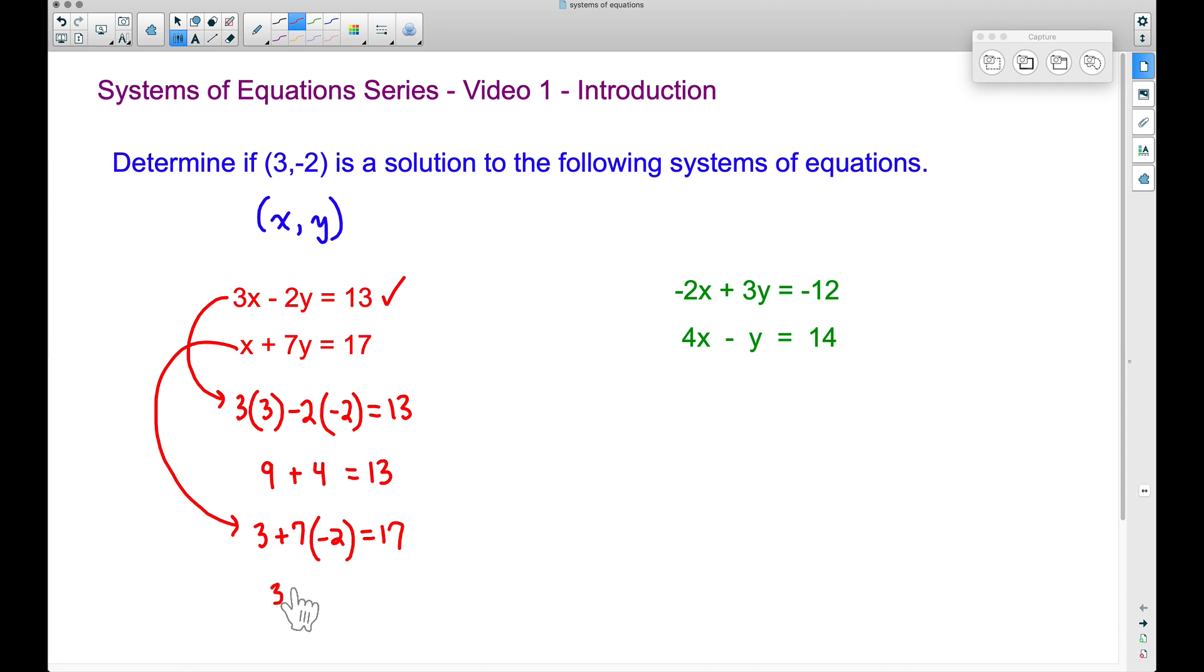Well, you have to be careful with your signs here. This is actually going to be three minus 14, because we have a positive seven times a negative two. Watch your signs there, and three minus 14 does not give us 17. Therefore, since this ordered pair did not work for both equations, this is not a solution.